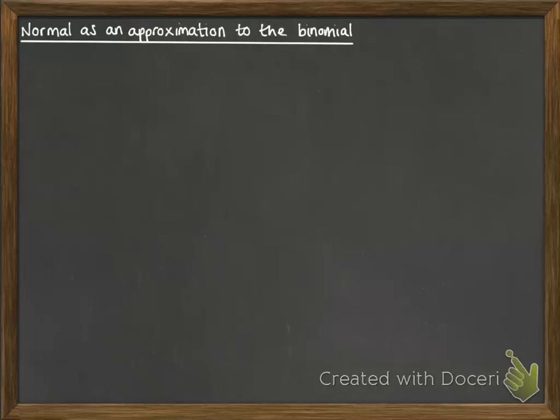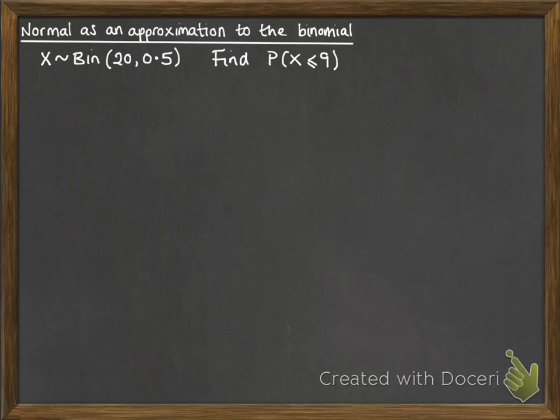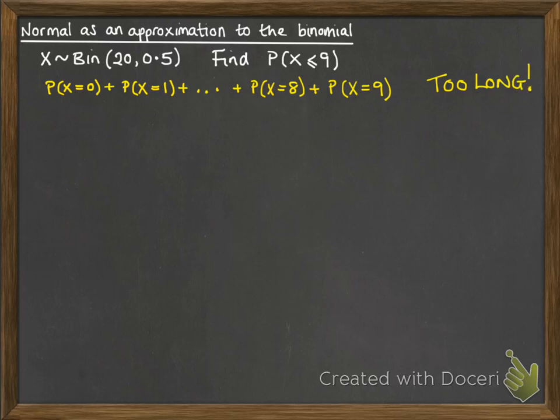The normal as an approximation to the binomial. So imagine you have a binomial distribution like this and you want to find out the probability that x is less than or equal to 9. Now just cast your mind back to binomial distributions a little bit. For this one you would have to do the probability that x is 0 plus x is 1 and so on all the way up to 9. You have to find each of those separately and add them together. That's far too long. So what we can do in certain circumstances is use a normal approximation and here's why.